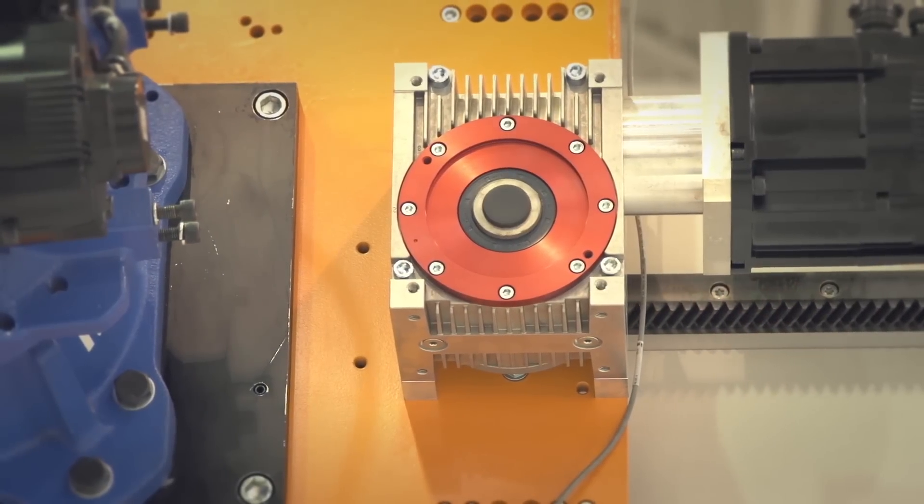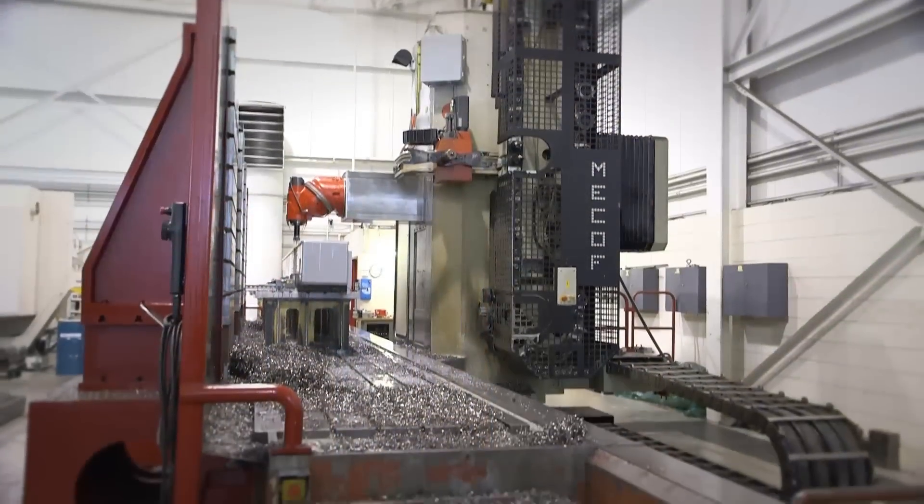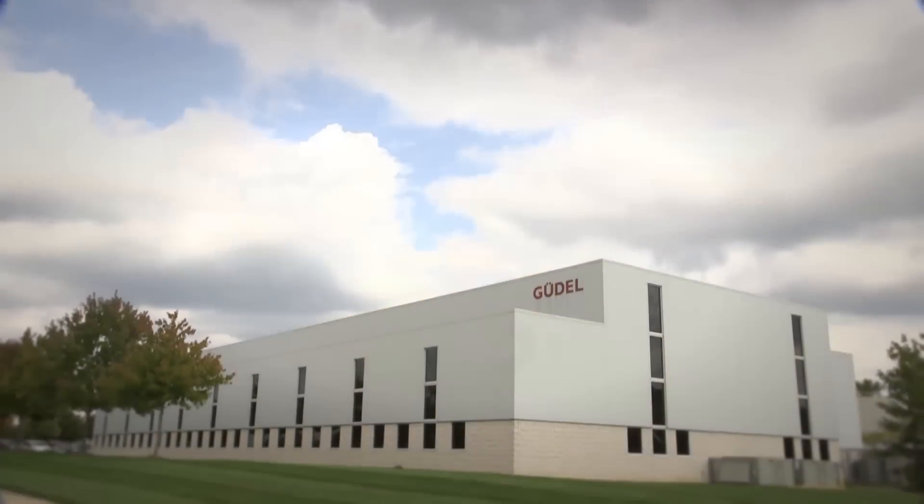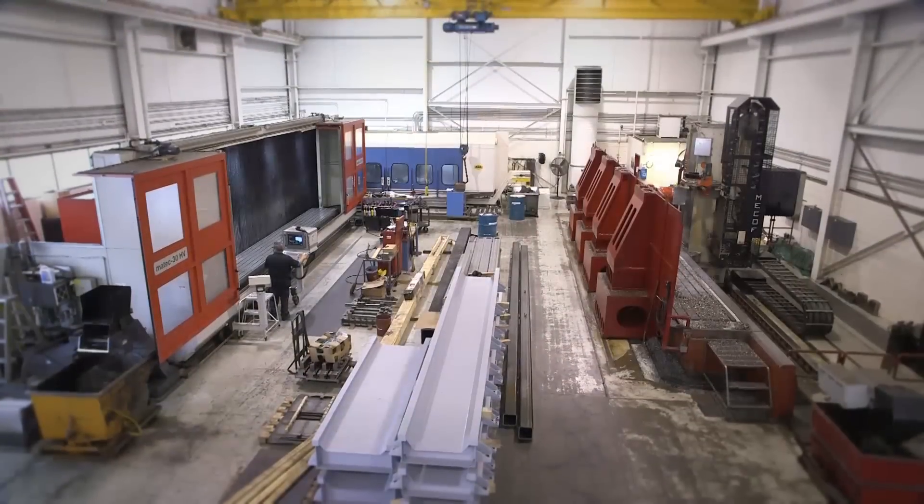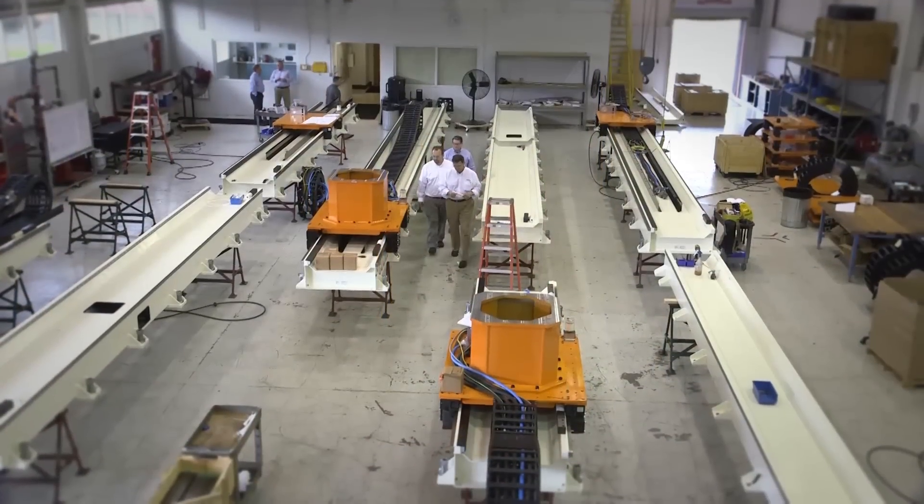Güdel uses linear motion components sourced from the company's Swiss factories, then fabricates, machines, paints, and assembles modules and solutions in Ann Arbor, Michigan, where two buildings provide 45,000 square feet of dedicated manufacturing space.